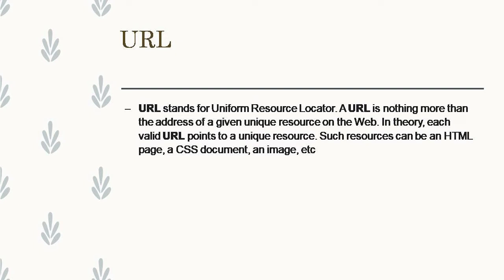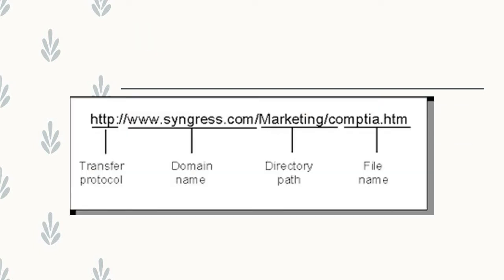For example, www.google.com is a URL. This URL is broken into the transfer protocol, domain name, directory path, and file name — what protocol is followed, what domain it comes from, and the file name are all included in the URL.